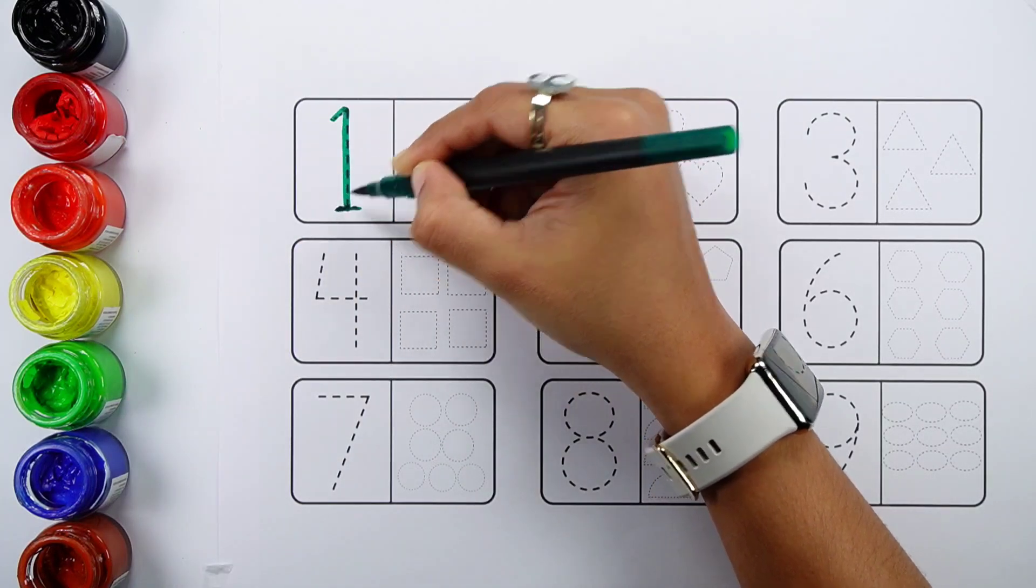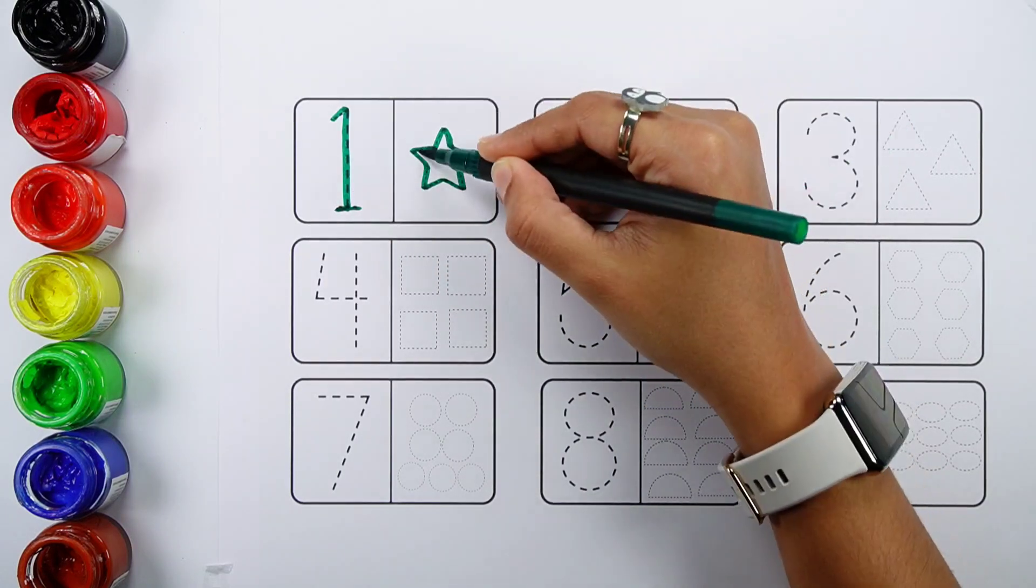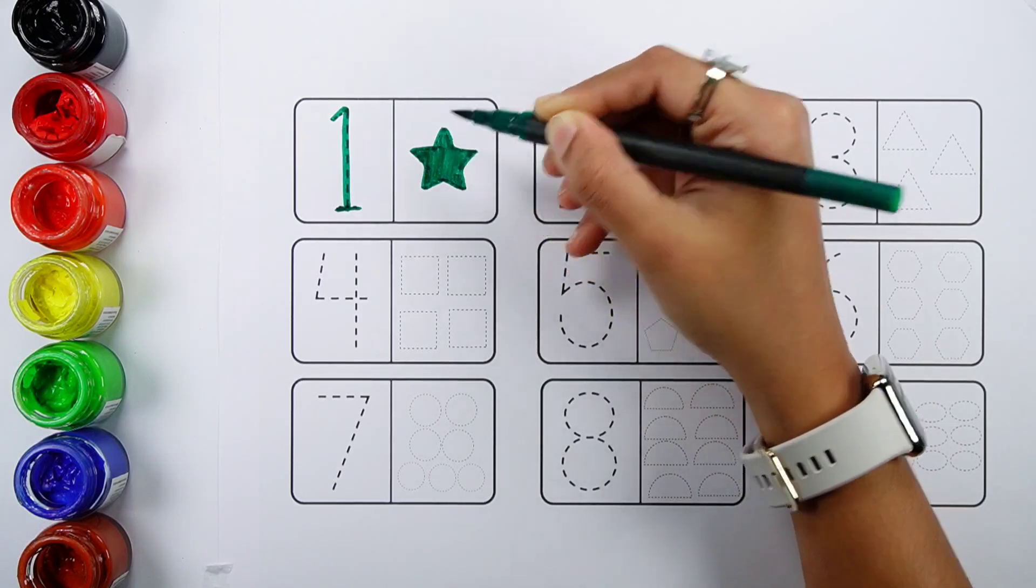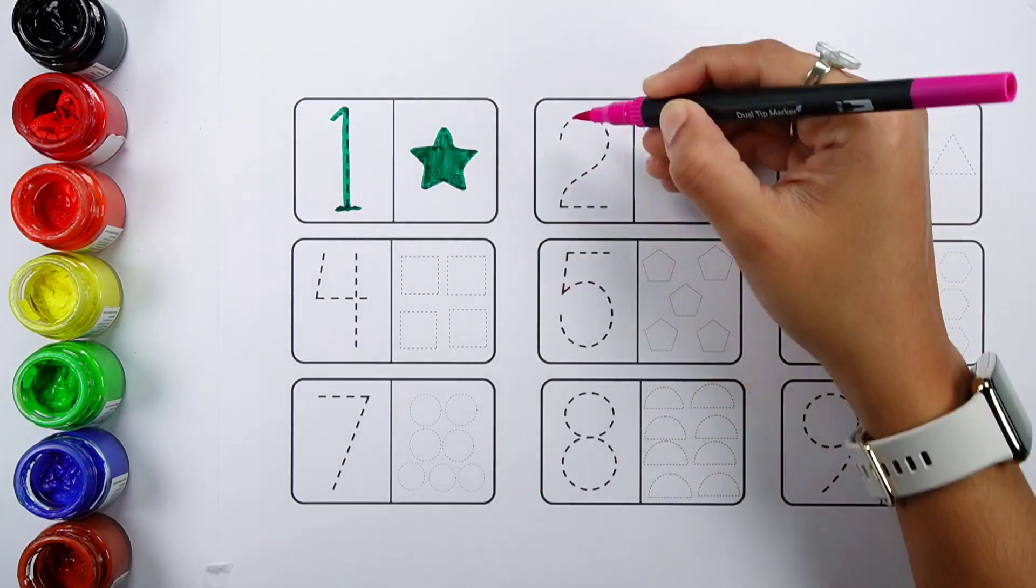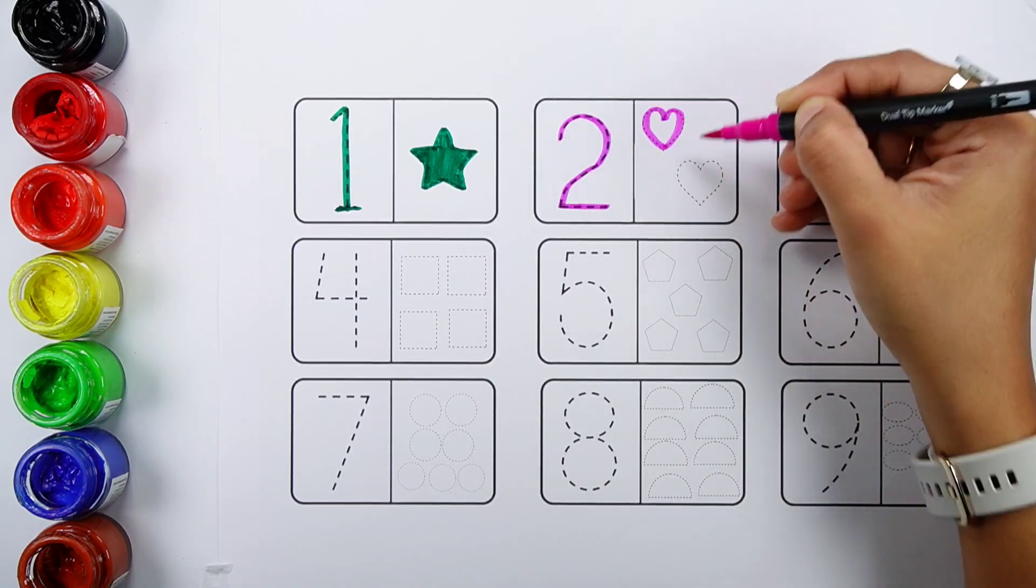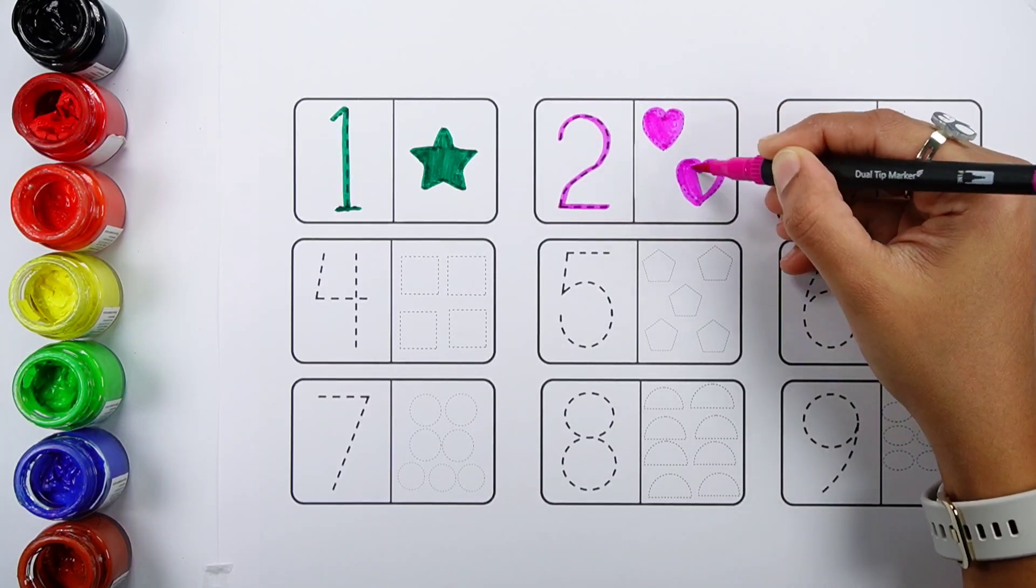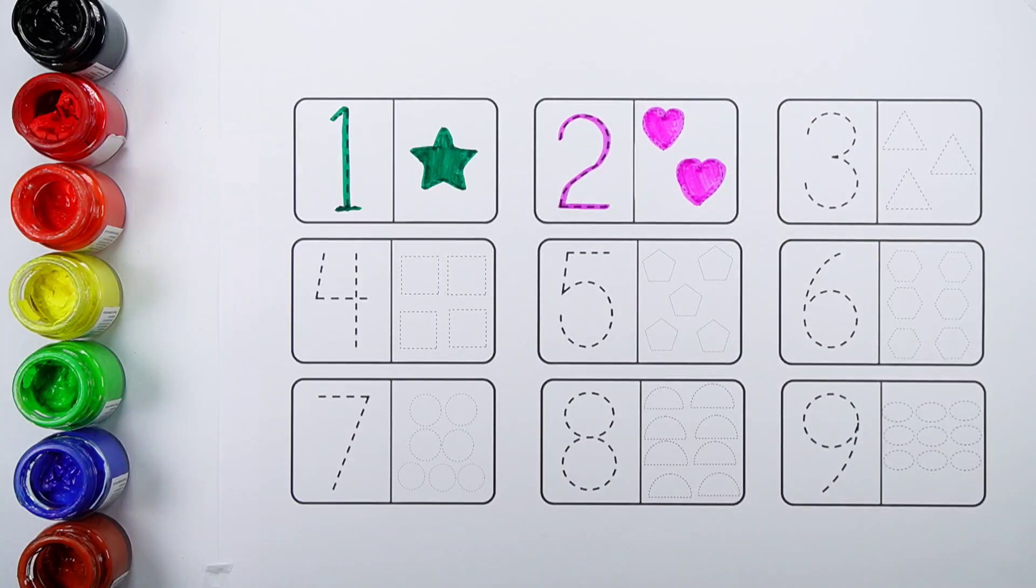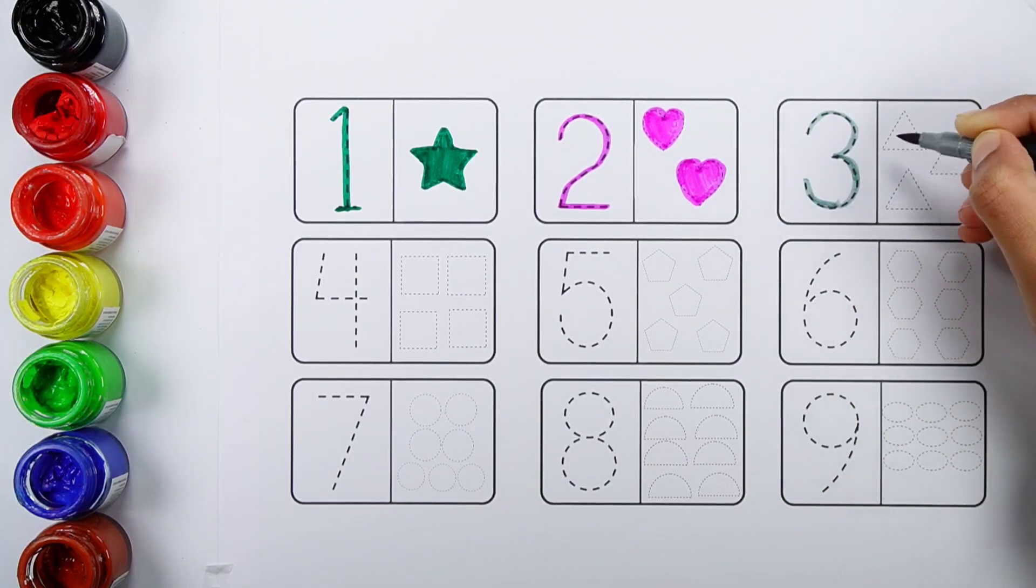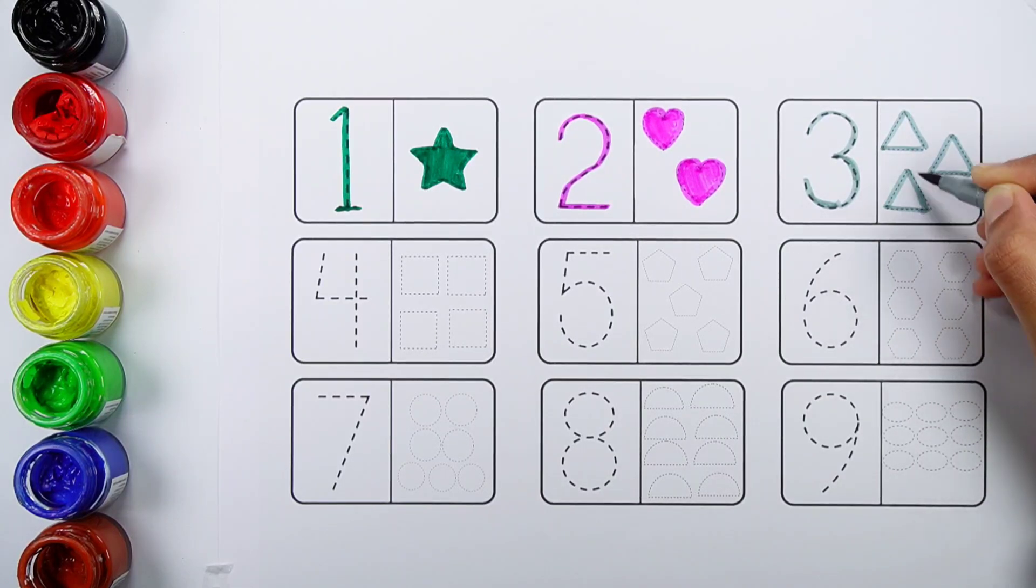Number one. One star. Number two. One, two. Two hearts. Number three. One, two, three. Three triangles.